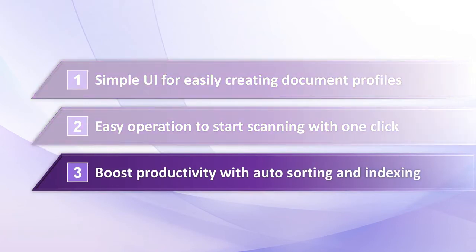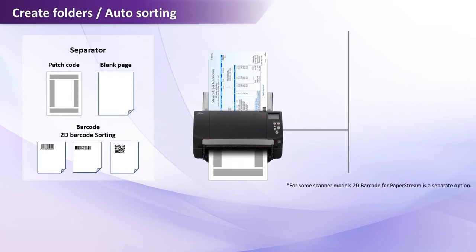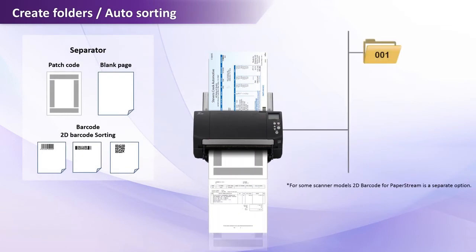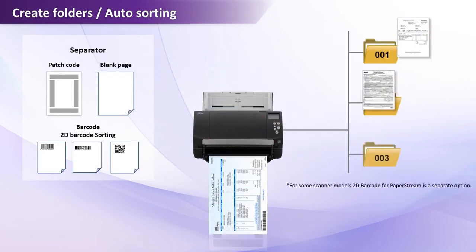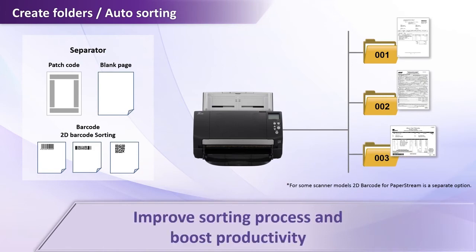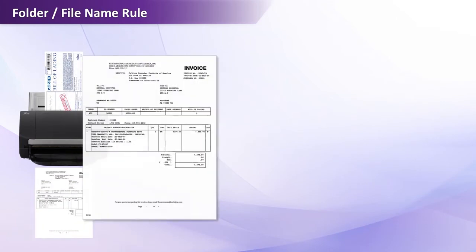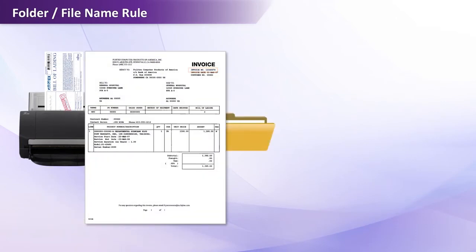Boost productivity with auto sorting and indexing. PaperStream Capture can automatically create folders and sort documents by patch code and barcode recognition to improve the work process. After scanning, the recognition results of barcode and zonal OCR are utilized to name folders and files.